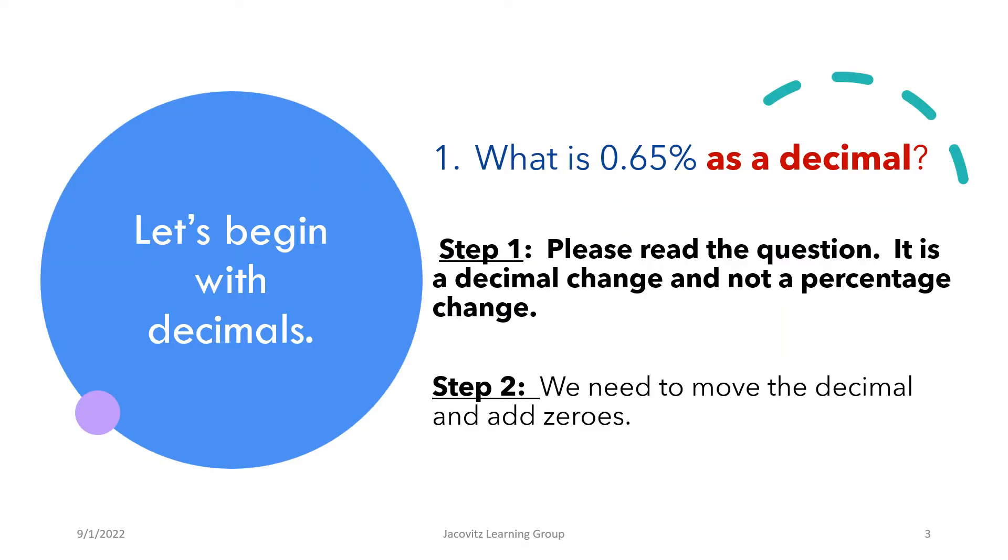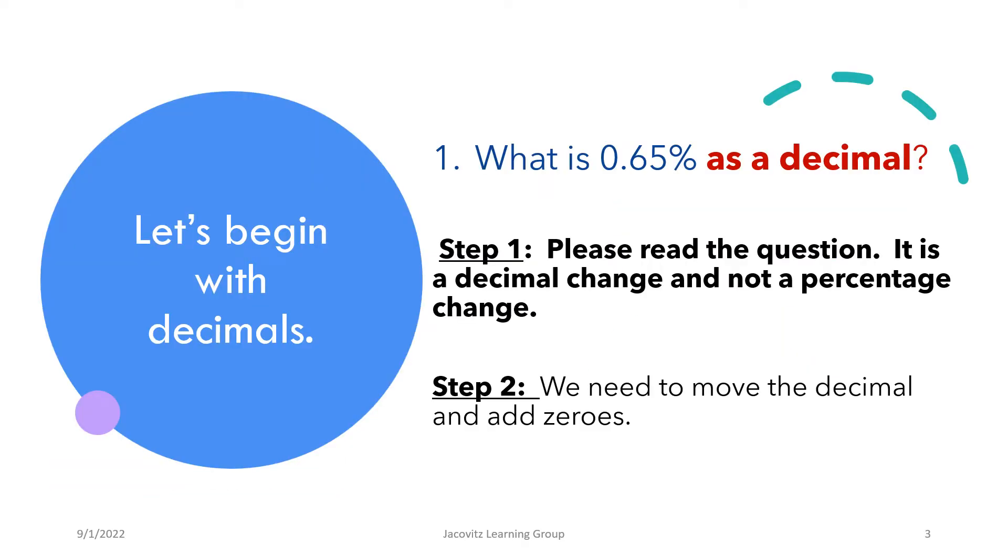Okay, look. Let's begin with a simple one: 0.65%. Read the question. It's asking you to change 0.65% to a decimal, not to a fraction. Keep this simple. You should be under two minutes to do this.